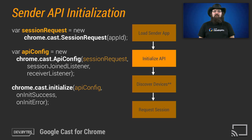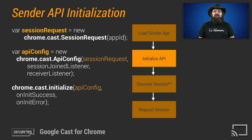With the detection out of the way, the web sender application is now ready to initialize the Cast API. Initialization connects the web sender to the Cast extension and lets the extension know that the web app is Cast enabled. Performing the initialization consists of creating a session request object that holds the application ID of the receiver that will launch. Then, constructing a new API config object which takes the session request object as well as a session listener and receiver listener callbacks. Lastly, the web sender calls the chrome.cast.initialize function and provides the API config object along with the success and error callbacks. When the success callback is invoked, the web application has successfully initialized the Cast APIs.